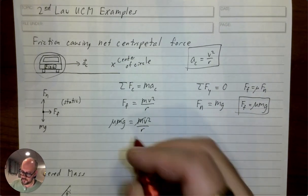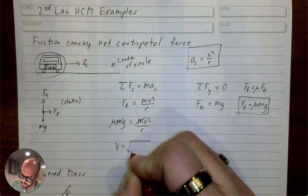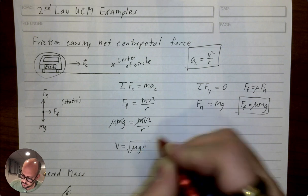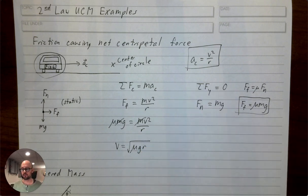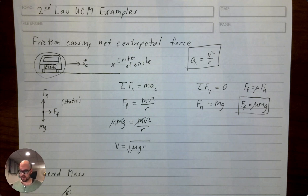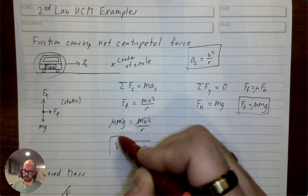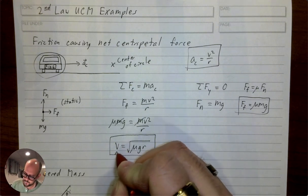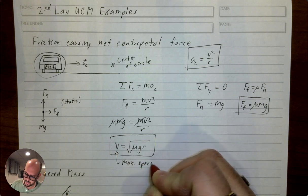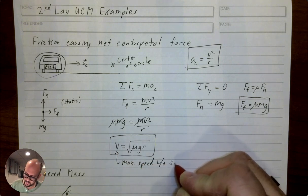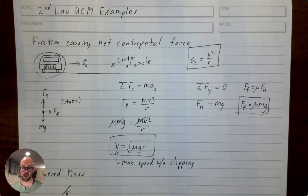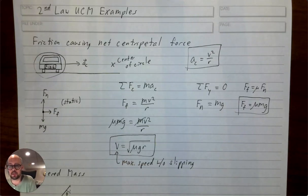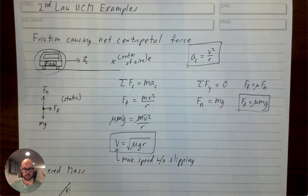Substituting friction as μmg into the centripetal equation gives μmg = mv²/r. Mass appears in every term, so dividing both sides by m gives μg = v²/r. Solving for v gives v = √(μgr). This is the maximum speed without slipping — or in a car, without skidding. The value √(μgr) is the maximum speed that car can travel in that specific circle without starting to skid.